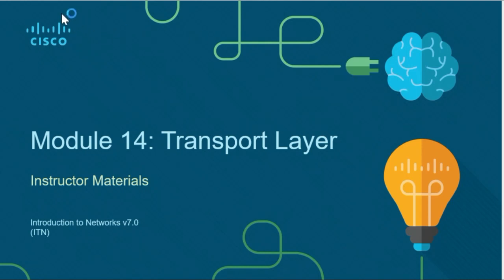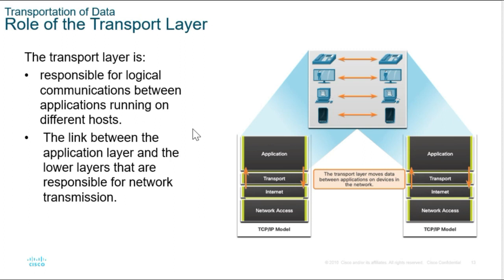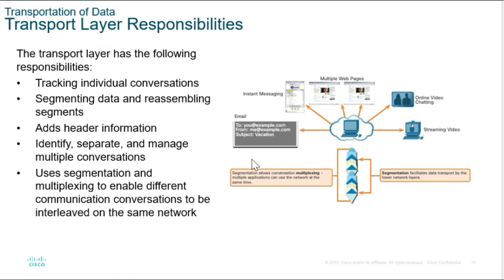Hi everyone. In this video, we're looking at Transport Layer. Transport Layer is responsible for logical communications between applications running on different hosts. It also acts as the link between the application layer and the lower layers, becoming the interface between the application and the network and data link layer. Some of the responsibilities of the Transport Layer include tracking individual conversations, segmenting data and reassembling segments, adding header information, identifying, separating, and managing multiple conversations, and also uses segmentation and multiplexing to enable different communication conversations to be interleaved on the same network.